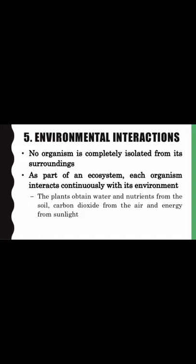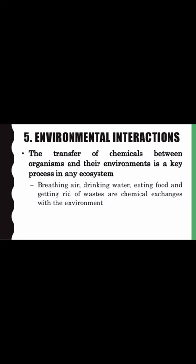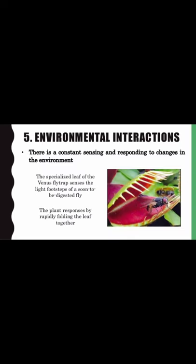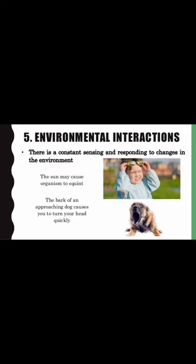Theme 5 — Environmental interactions: no organism is completely isolated from its surroundings. As part of an ecosystem, each organism interacts continuously with its environment. Plants obtain water and nutrients from the soil, carbon dioxide from the air, and energy from sunlight. The transfer of chemicals between organisms and their environments is a key process in any ecosystem — breathing air, drinking water, eating food, and getting rid of wastes are chemical exchanges with the environment. There is a constant sensing and responding to changes in the environment. The specialized leaf of the Venus flytrap senses the light footsteps of a fly and responds by rapidly folding the leaf together. Similarly, the sun may cause an organism to squint, and the bark of an approaching dog causes you to turn your head quickly.